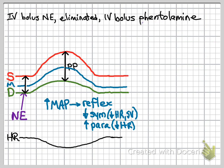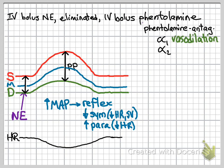Now let's talk about what happens with phentolamine. We've eliminated all excess norepinephrine from our system and we're going to give phentolamine, which is an antagonist of alpha-1 and alpha-2 receptors. Phentolamine is going to counteract the effects of sympathetic tone — that is, constitutively released norepinephrine on alpha-1 and alpha-2 adrenoceptors. By blocking alpha-2 receptors, we remove the negative feedback on norepinephrine release in response to sympathetic activity.